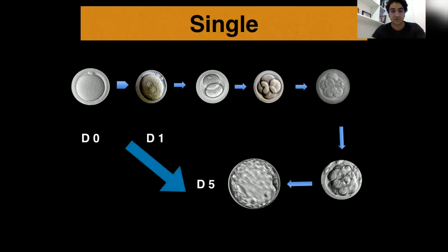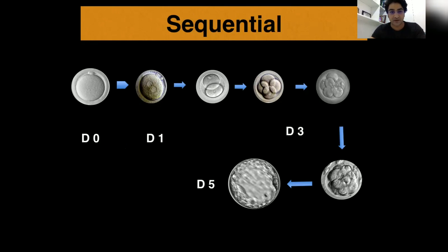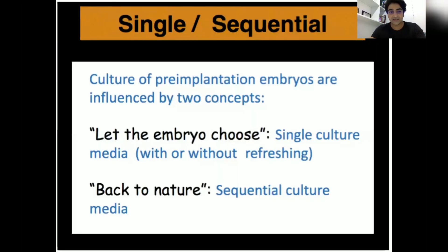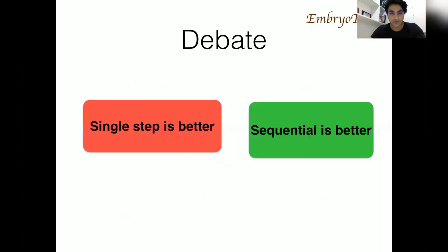In single step media, you change media once only — on day one at the PN stage — and you don't change the media till day five, the blastocyst stage. In sequential media, you change the media on day one and day three. Both media require the same temperature, carbon dioxide, and humidity, but in single step media, you put all the nutrition into the media and let the embryo choose what it wants. Sequential media is more physiological and is designed according to in vivo conditions.